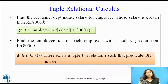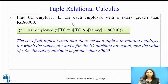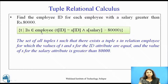Here we have taken all attributes. Now suppose we want only the id — in that case we use the 'there exists' (∃) notation. This symbol means 'there exists' — there exists t in relation r such that predicate q is true for that tuple. For example, to find employee id for each employee with salary greater than 80,000: {t | ∃s ∈ employee (t[id] = s[id] ∧ s[salary] > 80,000)}.